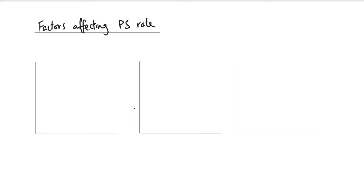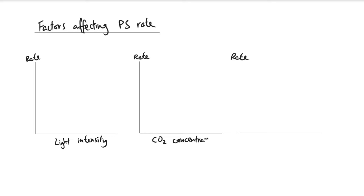Now we're going to look at some factors that affect the photosynthetic rate. There are mainly three factors, and I'm going to present them in three graphs. The y-axis is always about the rate of photosynthesis. The three factors are: light intensity, carbon dioxide concentration — because that is one of the main reactants — and temperature. We don't talk about water availability affecting photosynthesis so much, because before water is used in photosynthesis it's used in retaining the turgidity of cells and maintaining cell structure.